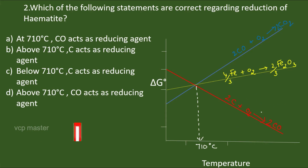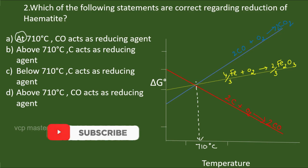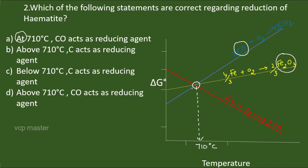Question 2 is about the reduction of hematite. From the Ellingham diagram, exactly at 710°C all three lines intersect with the same ΔG⁰ value, so neither carbon nor carbon monoxide can be used as a reducing agent at that point. Above 710°C, the carbon line is well below the iron oxide line, so carbon can be used as a reducing agent. Below 710°C, the carbon line is above the iron oxide line, so carbon cannot be used. The correct answer is option B: above 710°C, carbon acts as a reducing agent.